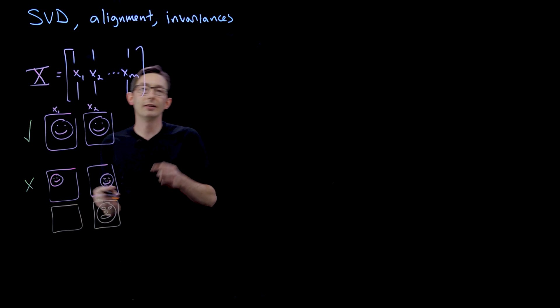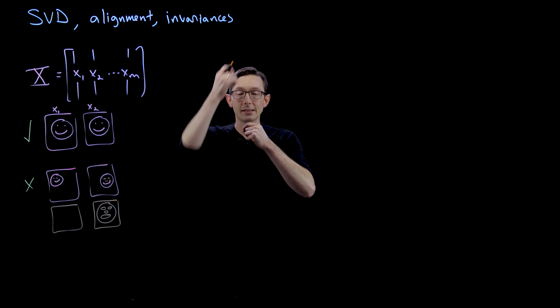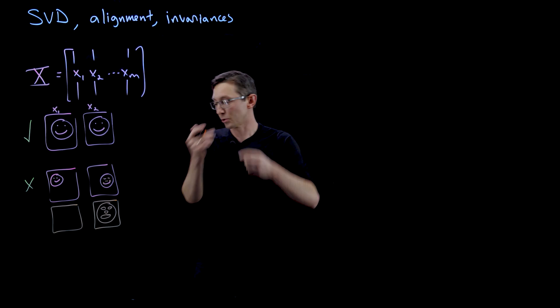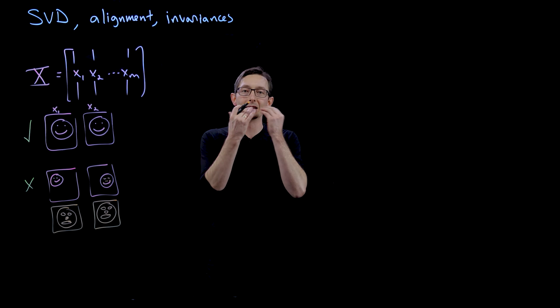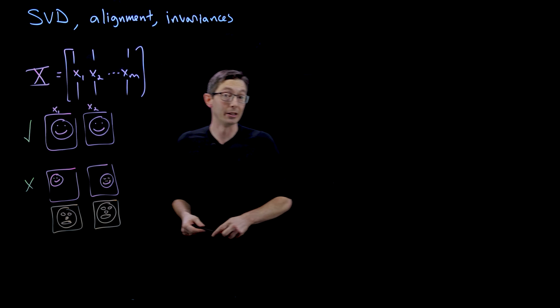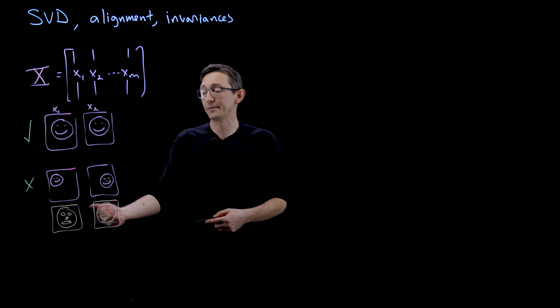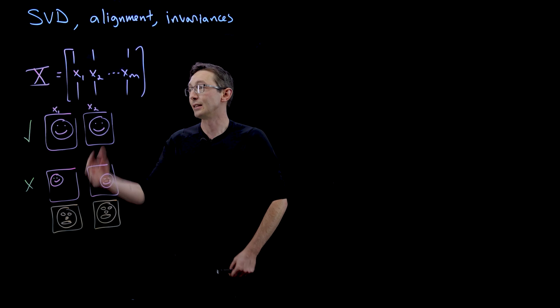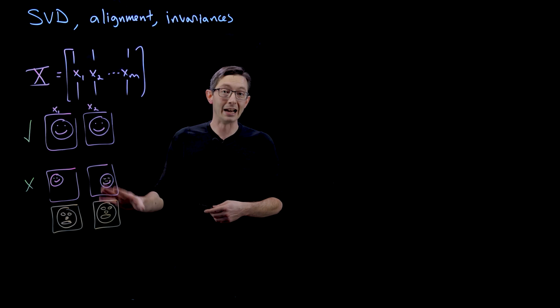So even if one person had maybe wider eyes and a taller face or narrower eyes and a shorter face, they would get mapped onto this standard template so that the pixels in the mouth region, the nose region, and the eye region could be compared apples to apples from image to image. And that gives you much better classification performance and dimensionality reduction feature extraction just by cropping and aligning your data.